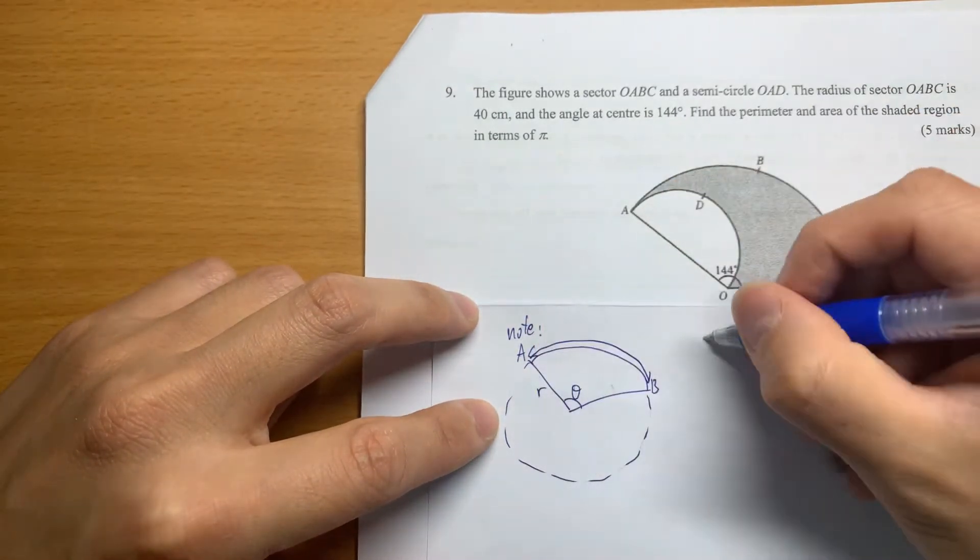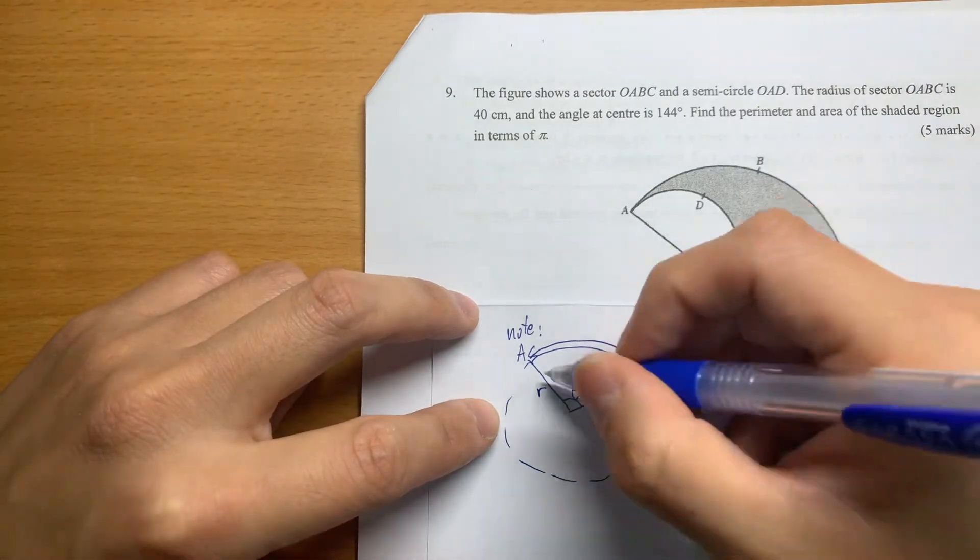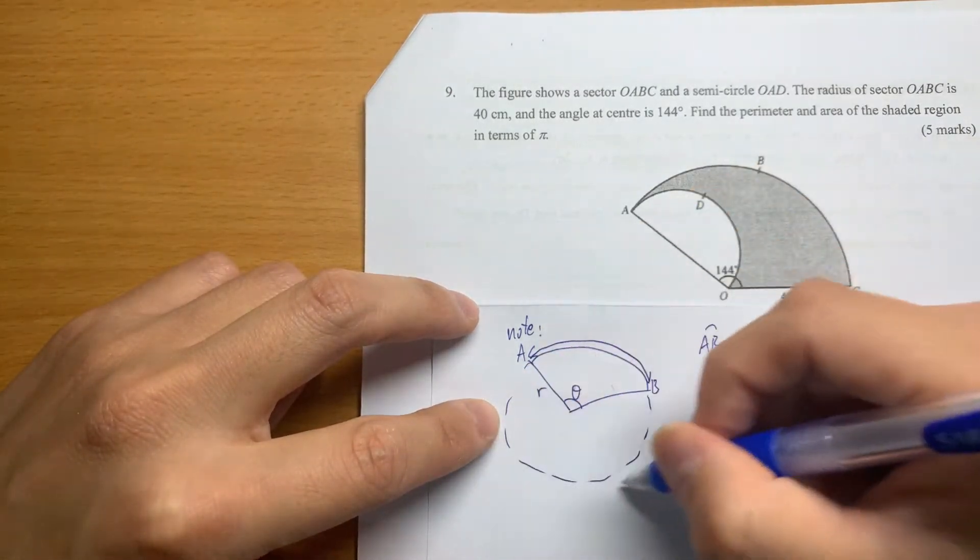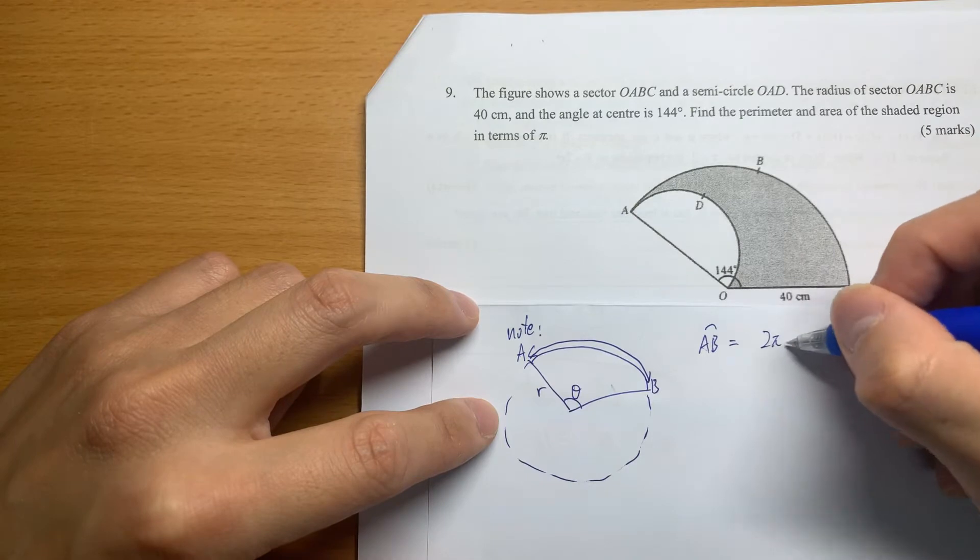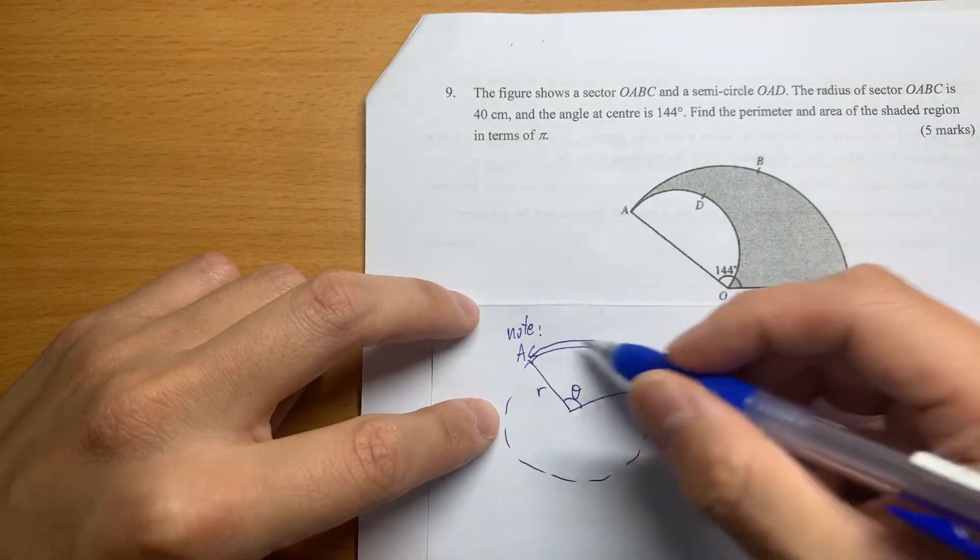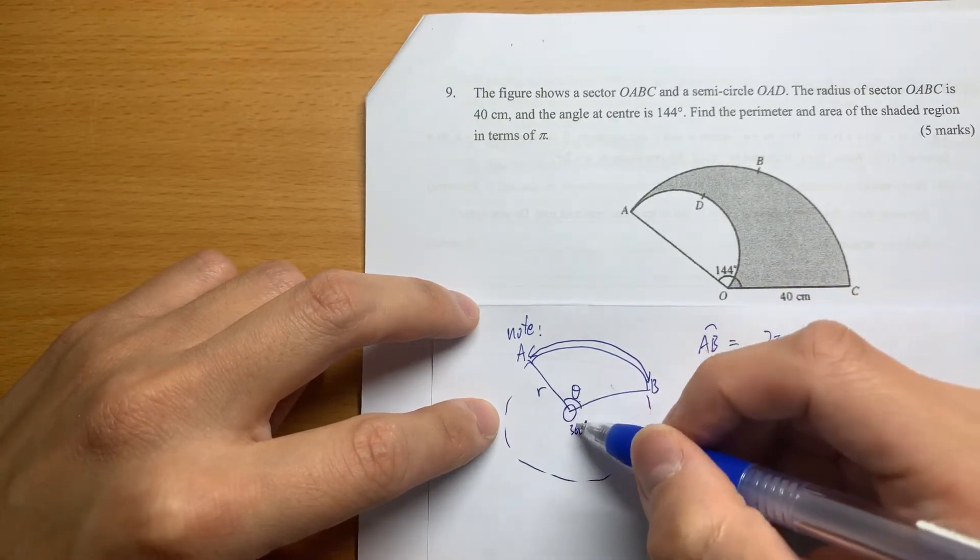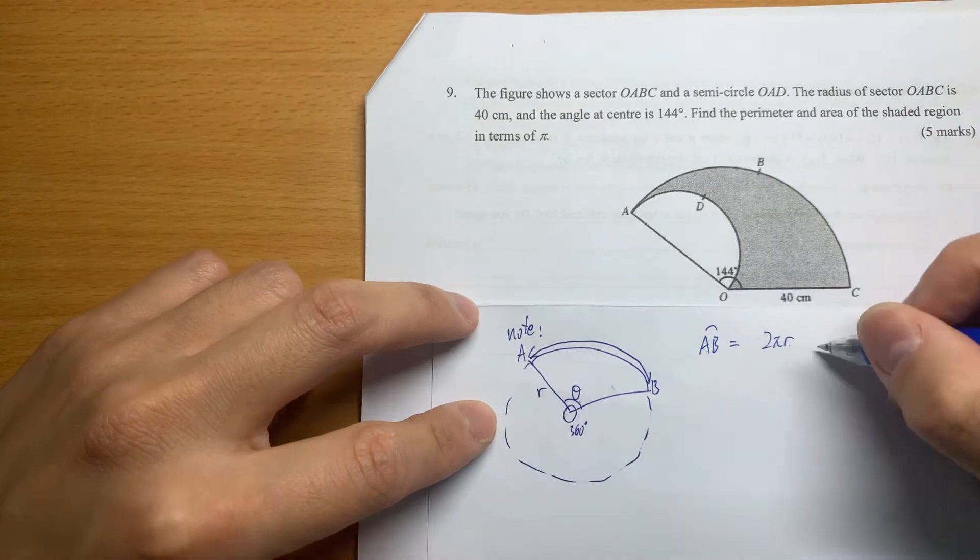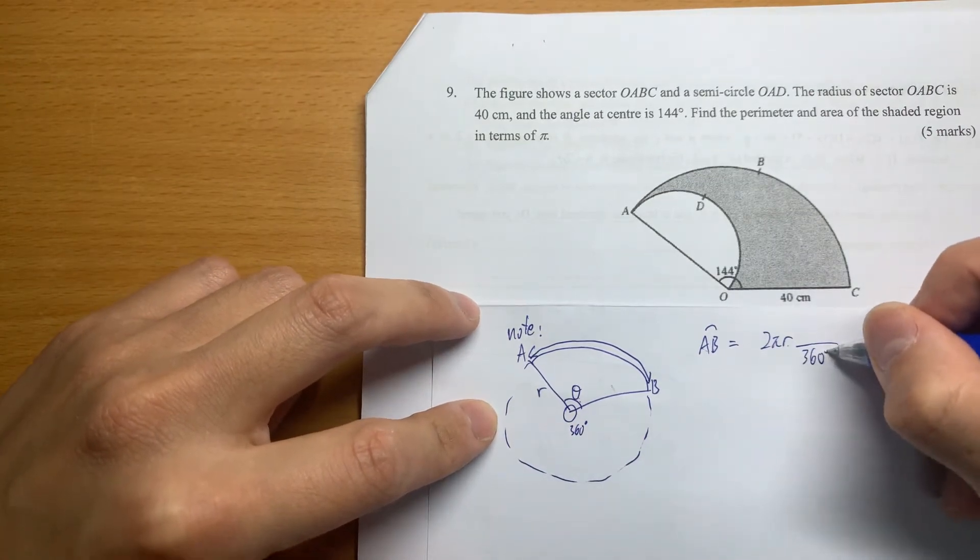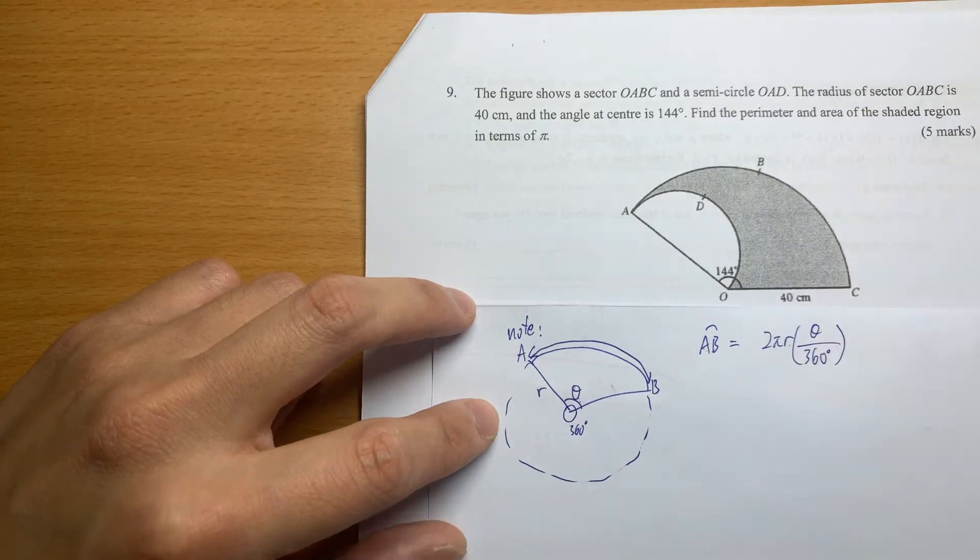There are two things we need to learn. The first one is about the arc length. We call it arc AB. The notation is like this - it's talking about the whole circle length, which means 2πr, the diameter times π. But we don't have the full circle. We just have, among 360 degrees, we just got θ out of it. So divide by 360, and we get θr/360 as the formula for the arc length AB.